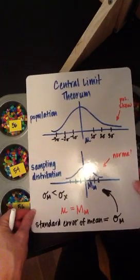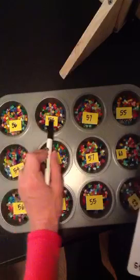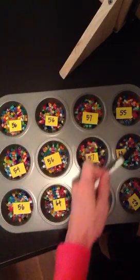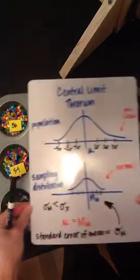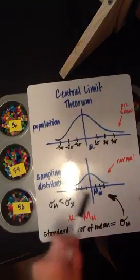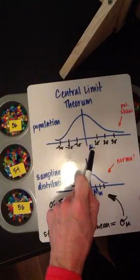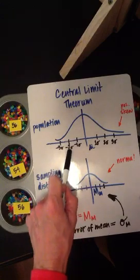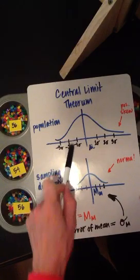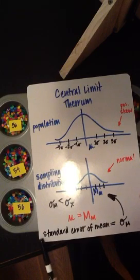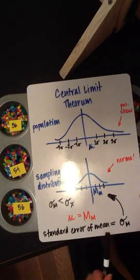So what you need to remember is that when we take repeated samples from a population, we find their means, we create the distribution of their means, that distribution will have a mean that is equal to the population mean and it will have a standard deviation that's smaller than the population standard deviation. And that the standard deviation of the sampling distribution is called the standard error of the mean.